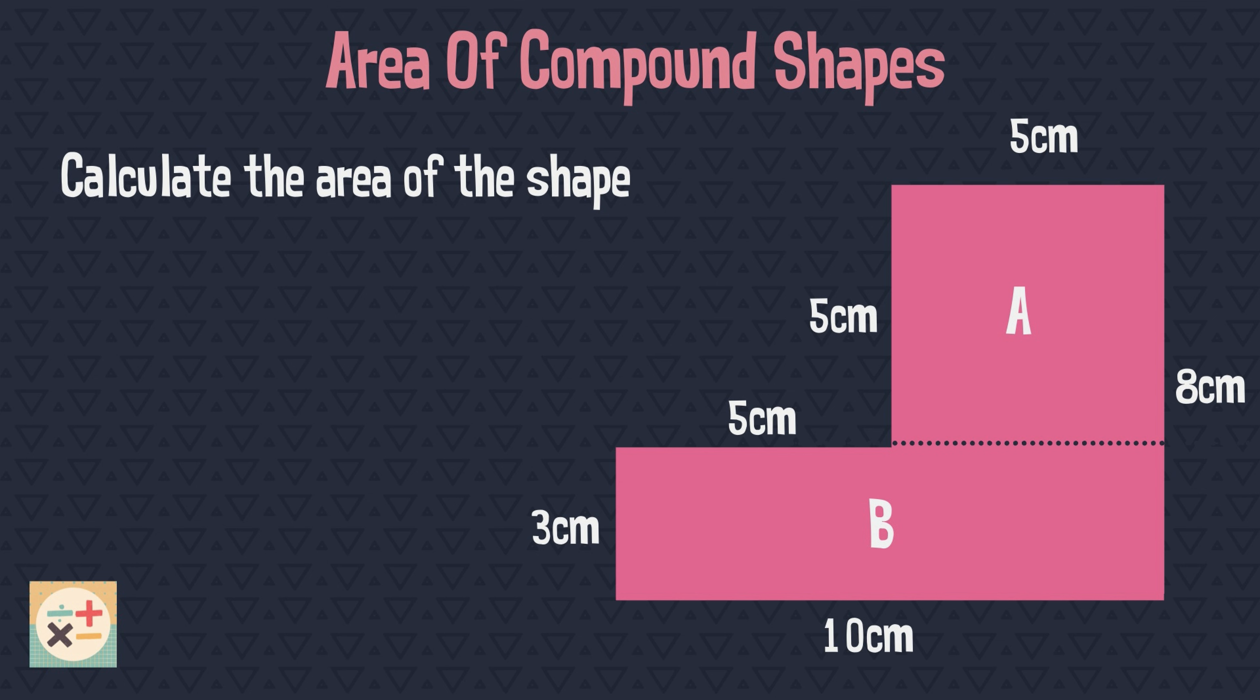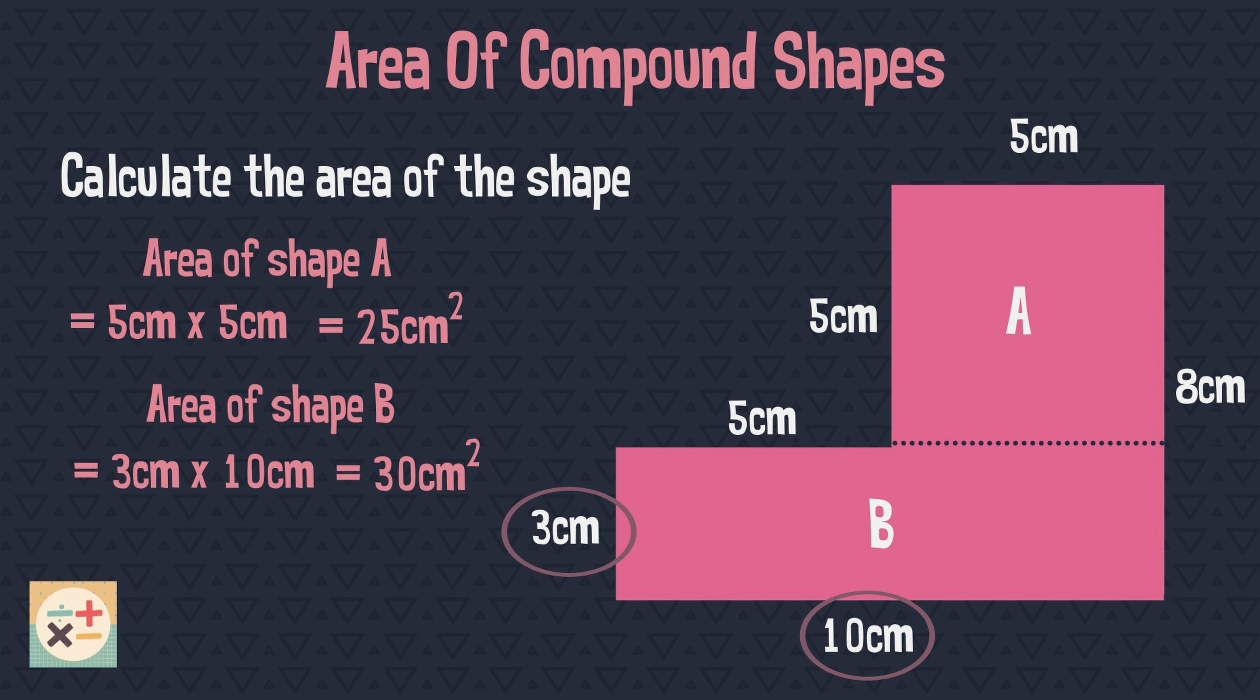We can now use the measurements given to calculate the area of shape A, and then shape B. Now that we have calculated both areas, we can add these together to find the area of the whole shape.